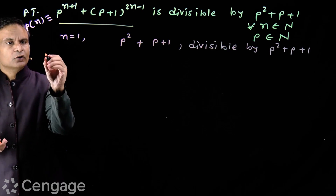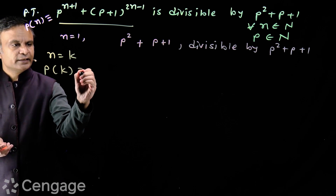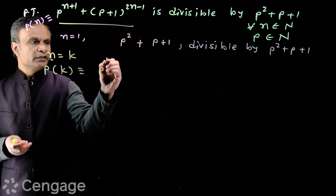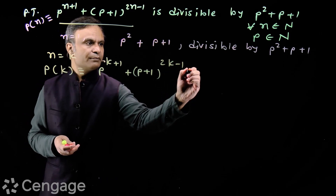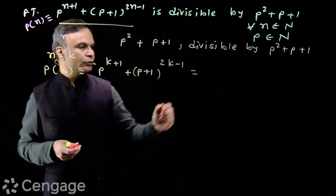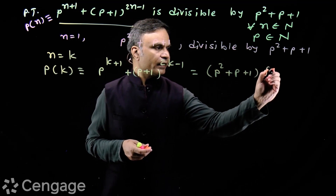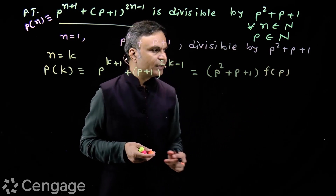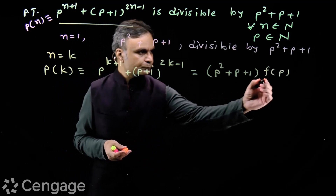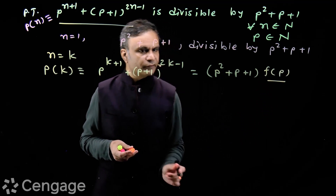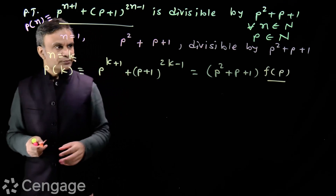Now assume that the statement is true for some n=k. That means we have statement P(k) as: p^(k+1) + (p+1)^(2k-1) = (p²+p+1) × f(p), where f(p) is some polynomial in p. This is the quotient when we divide this expression by p²+p+1. This is our assumption step.